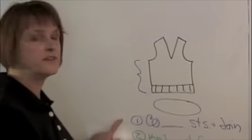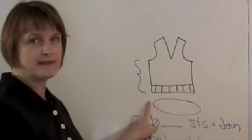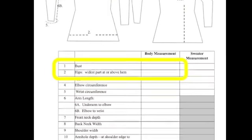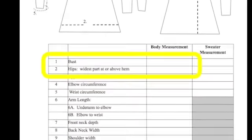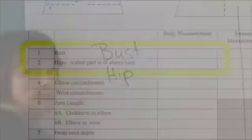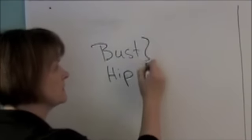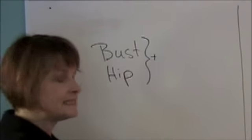We'll start by figuring out the number of stitches to cast on. That number right there. We'll begin by going to your measurement chart and looking at the bust measurement and the hip measurement. Now we will take the larger of these two measurements and to that we will add ease.